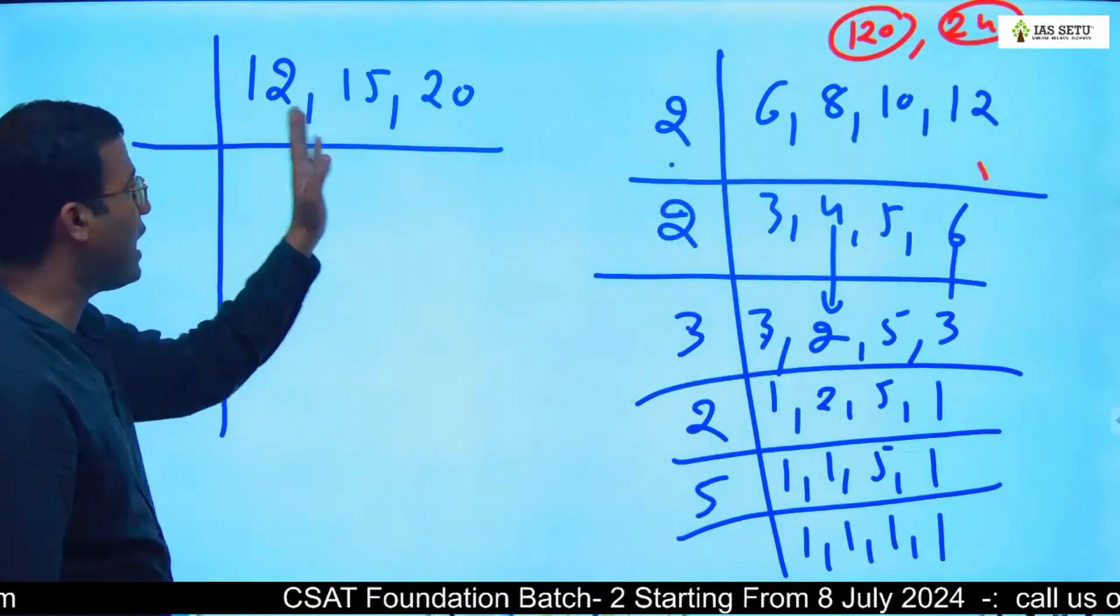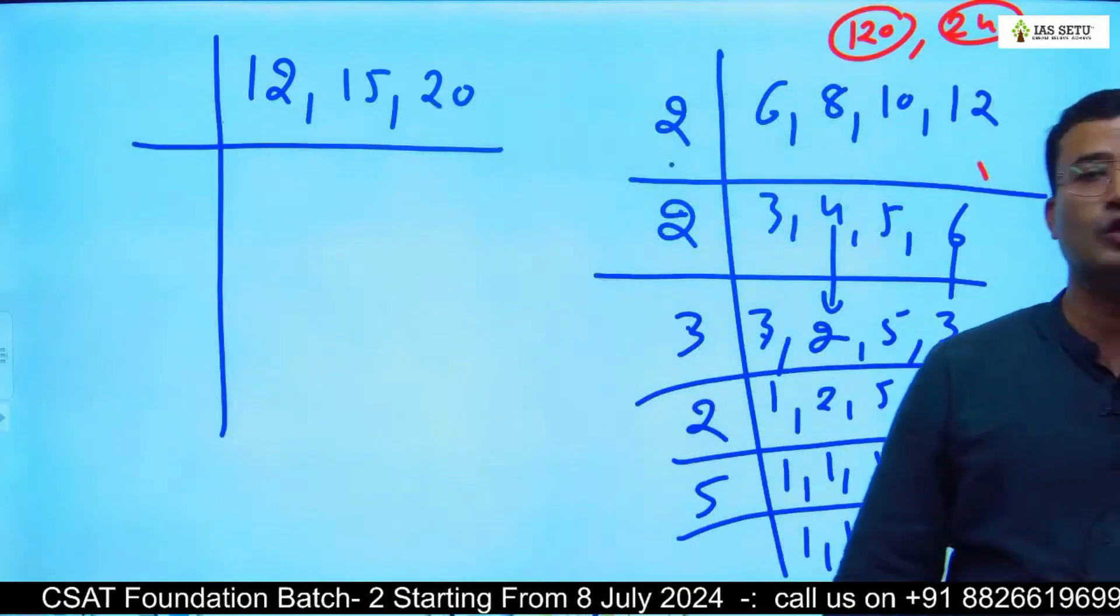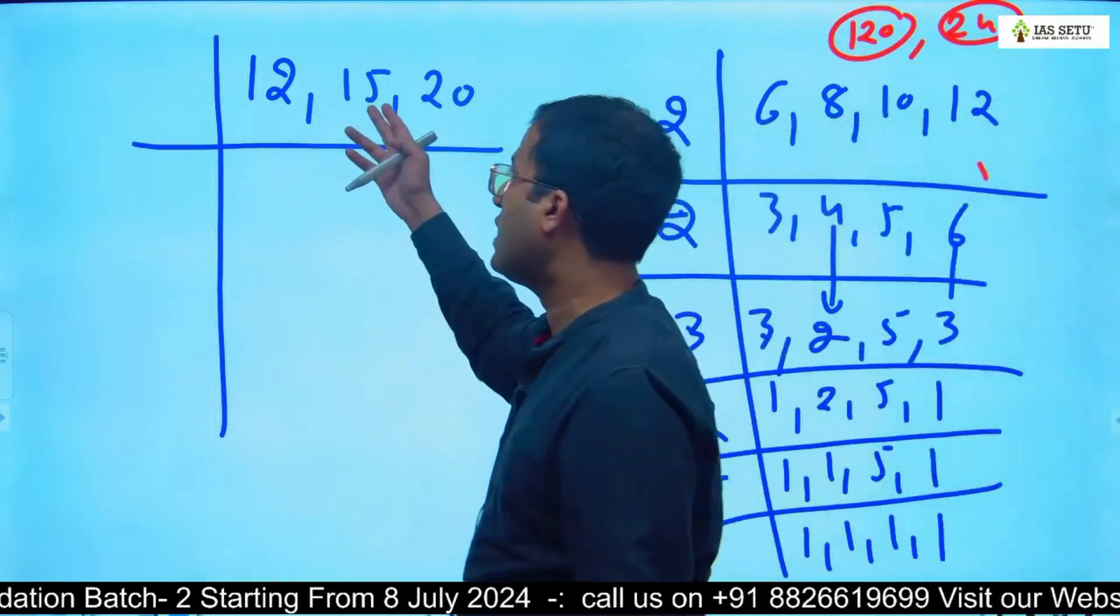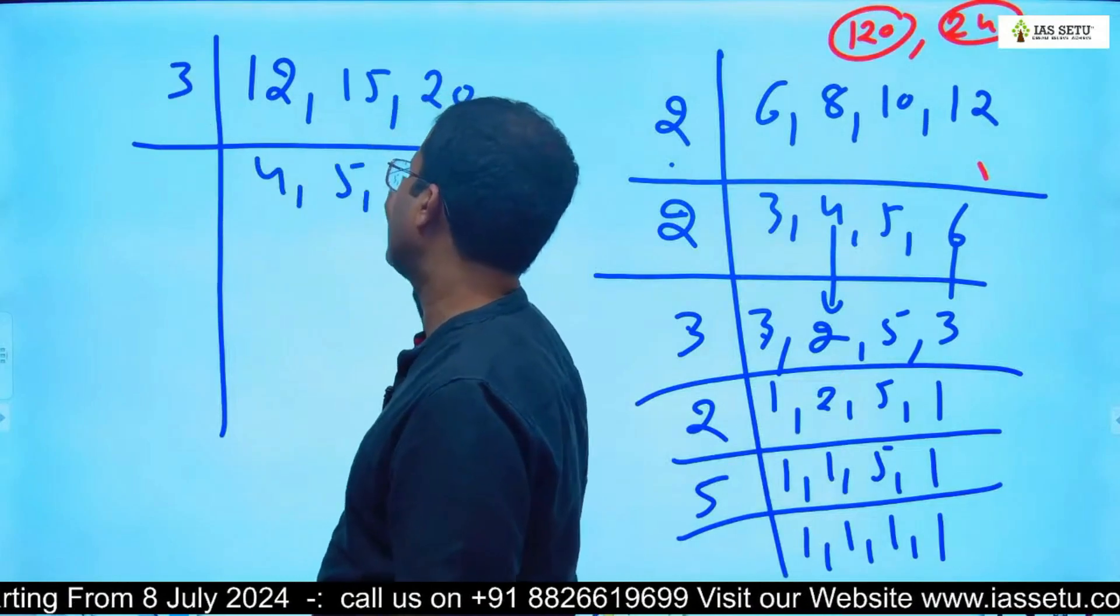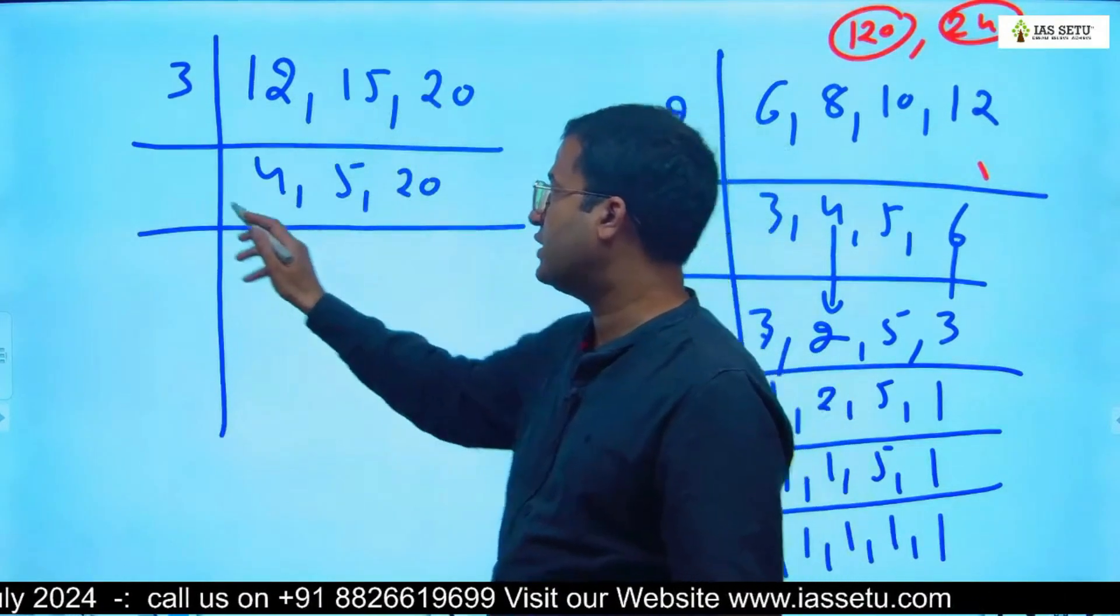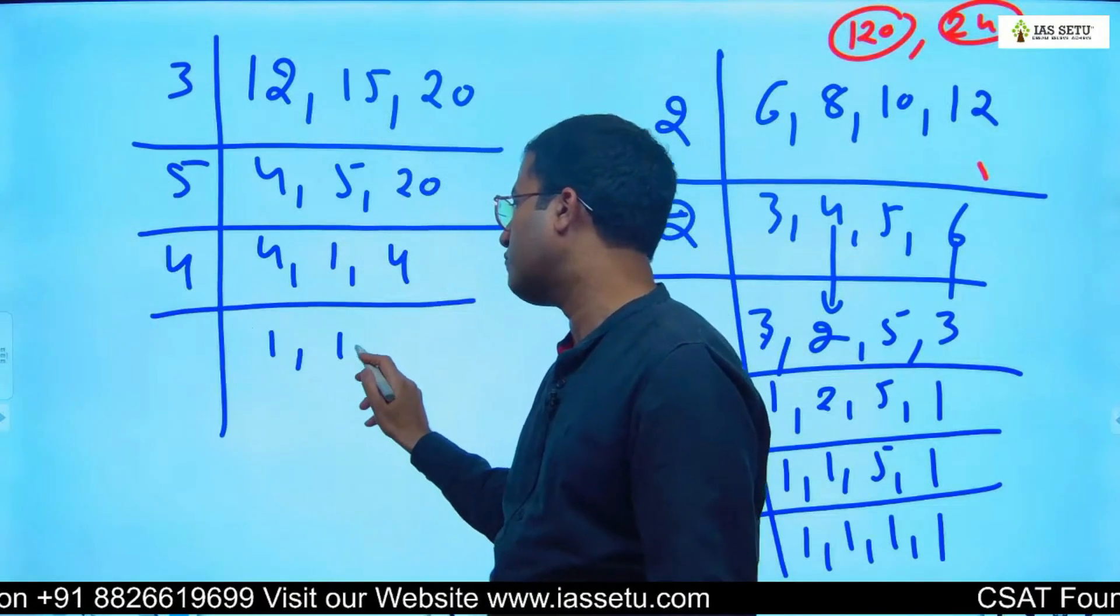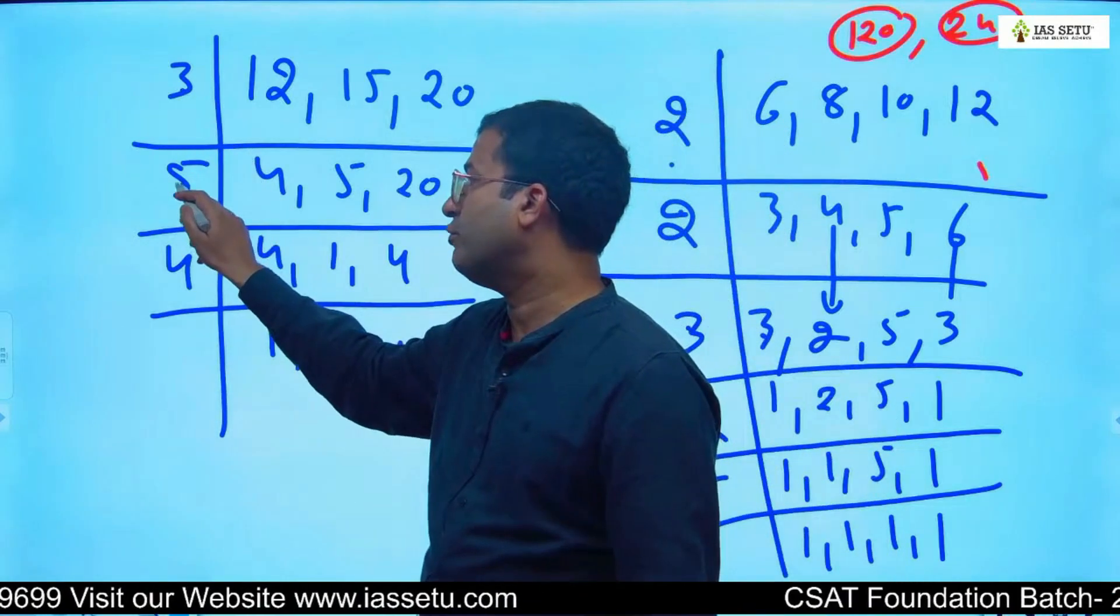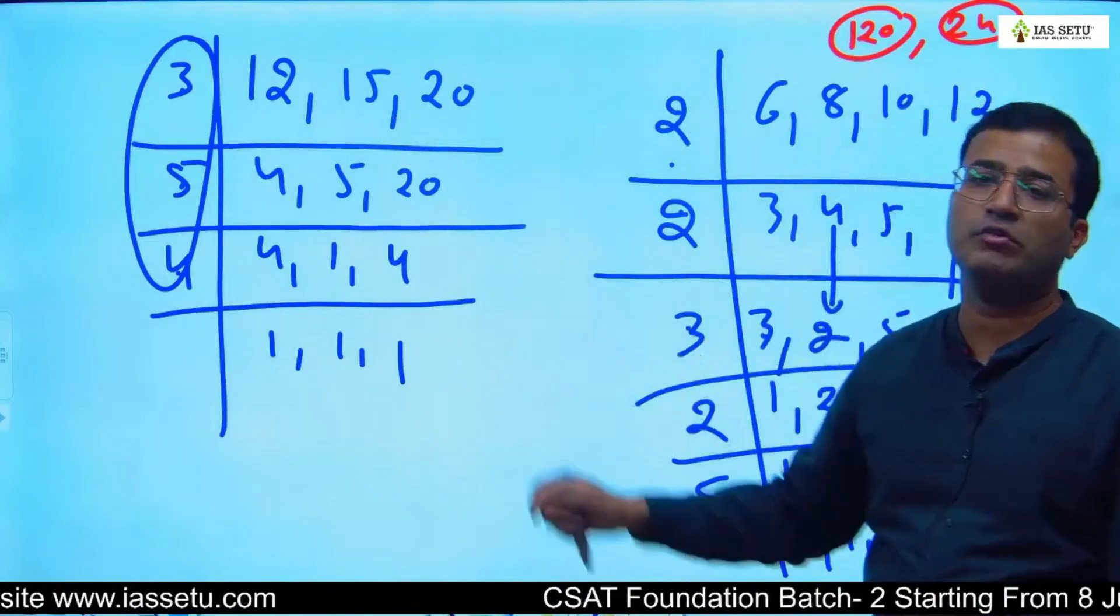Now here, 12, 15, 20. We don't have a common factor from all the numbers, so we will take common from any of the two numbers. Like here, 12 and 15, we have 3 common: 4, 5, 20. Then 5 and 20 give you 5 common: 4, 1, 4. Then take 4 common: 1, 1, 1. So 3 × 5 = 15, 15 × 4 = 60. So what is the LCM of 12, 15, 20? 60.